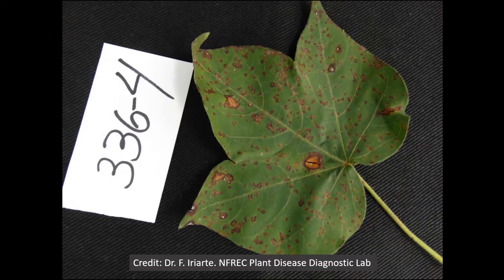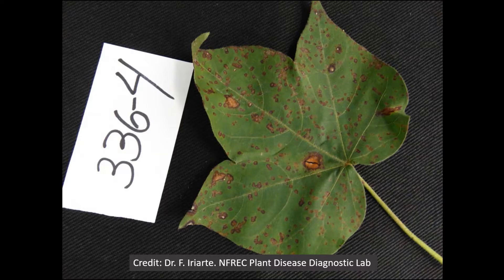One of the members of the leaf spot complex that I mentioned is cercospora leaf spot. What you see in this picture is a cercospora leaf spot lesion — this diagnosis was done by Dr. Fanny Iriati at the NFREC plant disease diagnostic lab. There is this reddish color and there can be concentric rings, which may make it confusing with target spot lesions, but the center of this leaf spot can become whitish or a light color as the lesion expands.